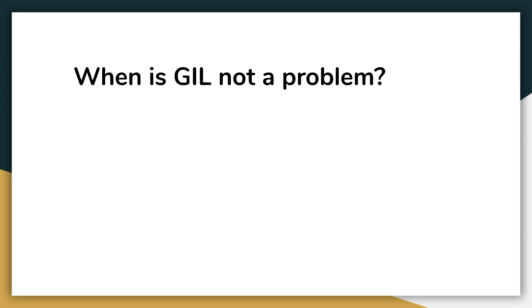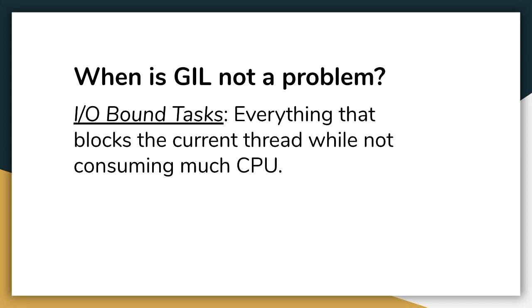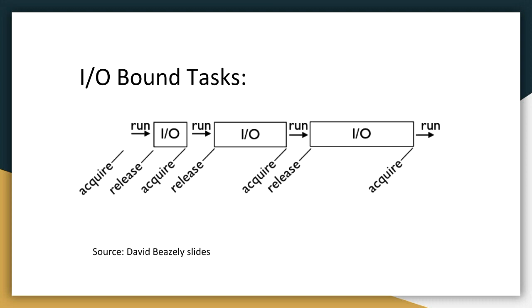Let's talk about when the GIL is not a problem. If you have a thread that's actually waiting for something and not doing computations — for example, waiting for a file to read or write, or waiting for some network calls, or waiting for a socket message — that is when other threads can share the GIL. The GIL is released and you can have multi-threads working. Looking at this diagrammatically: one thread is waiting for IO, and while it waits, other ready threads acquire the GIL, do their work, release it, then acquire it again.